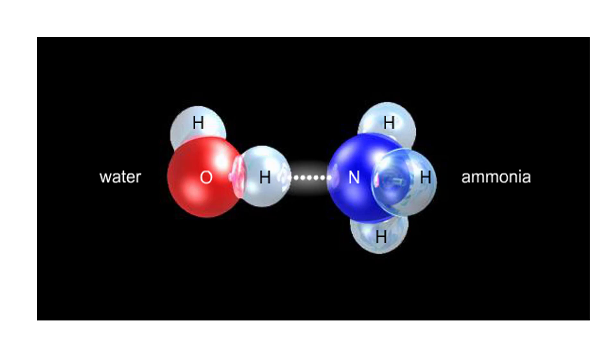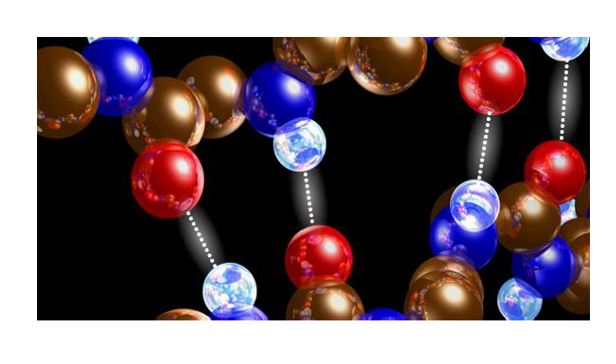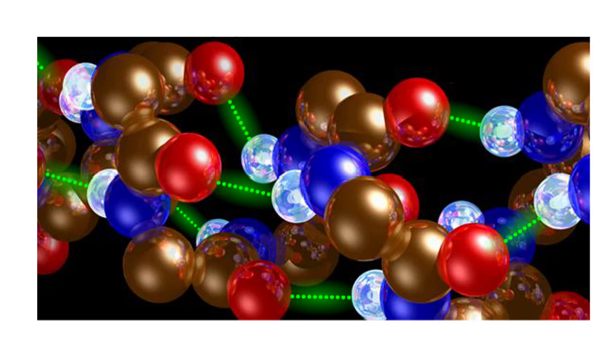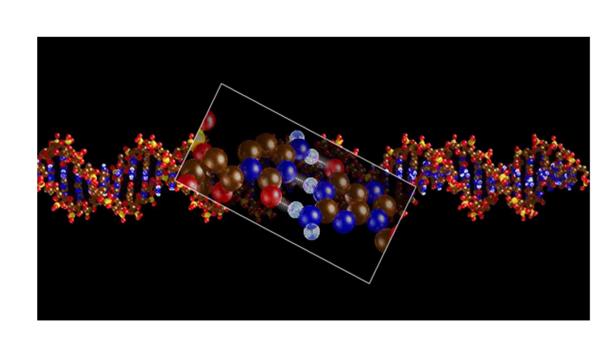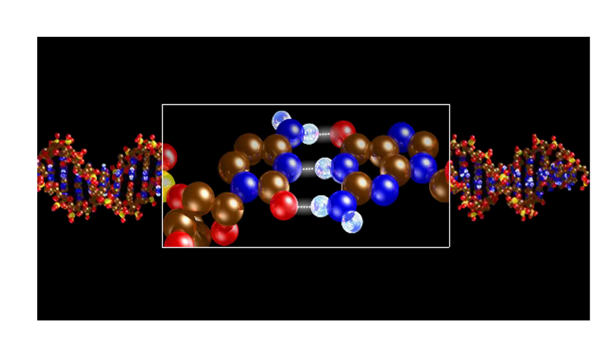Multiple hydrogen bonds can hold two large molecules together, or stabilize the twists and folds of a single large protein. Hydrogen bonds join the two strands of a DNA molecule. Although hydrogen bonds are weaker than covalent bonds, extensive hydrogen bonding has a major role in the structure and behavior of DNA, water, proteins, and many other substances.